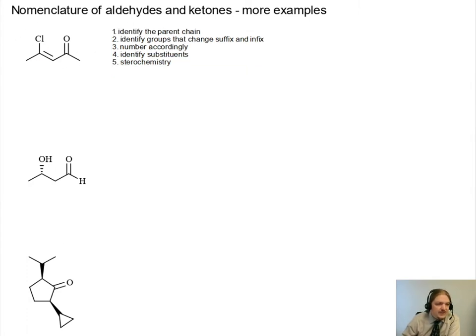So our first job is to identify the parent chain. This parent chain here has 5 carbon atoms in it. I'll highlight those in red. And so at stage 1, we would have a pentane parent chain.